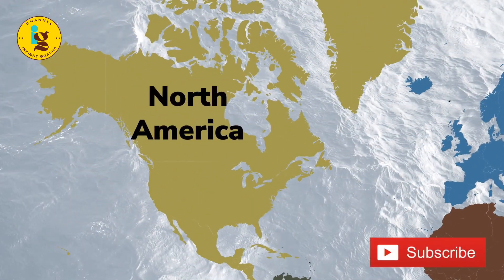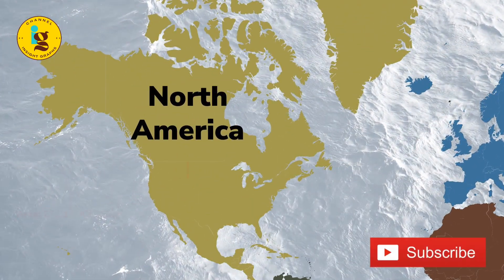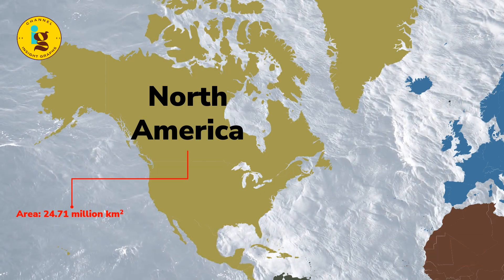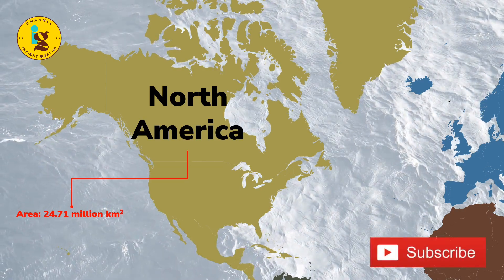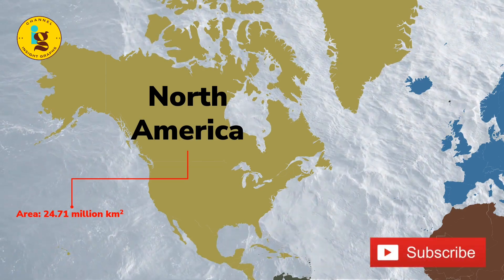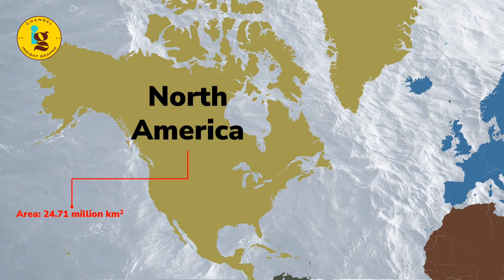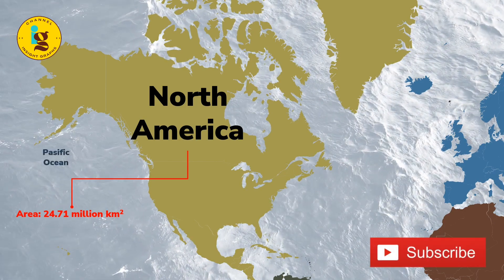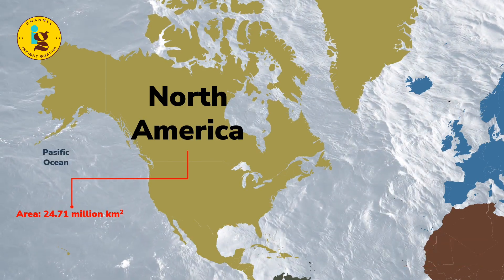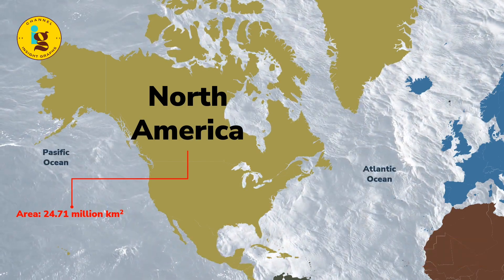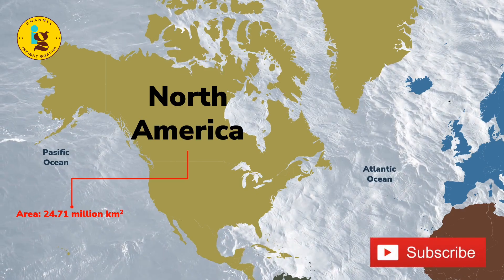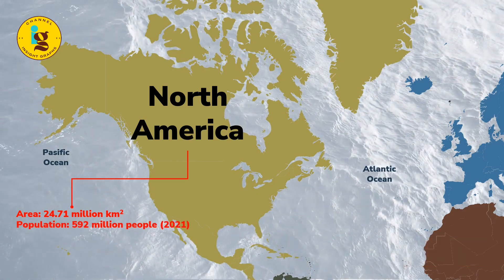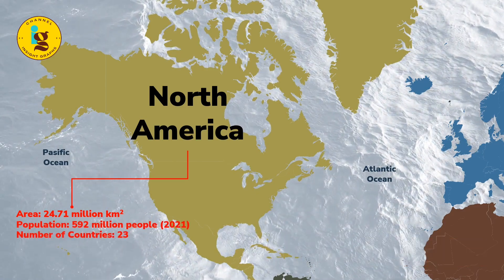North America is the third largest continent on earth, covering approximately 24.71 million square kilometers. It is located primarily in the northern hemisphere and is bordered by the Arctic Ocean to the north, the Pacific Ocean to the west, and the Atlantic Ocean to the east. It has a population of over 592 million people and is home to 23 countries.